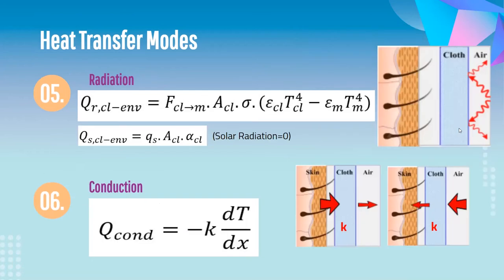Radiation takes place between the body and clothes and is given by the standard radiation formula. Solar radiation is zero since we assume the room is closed. Finally, conduction in the clothing layer is calculated by −k × dT/dx.